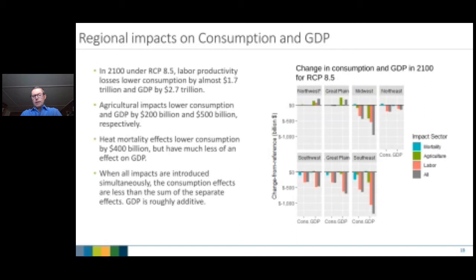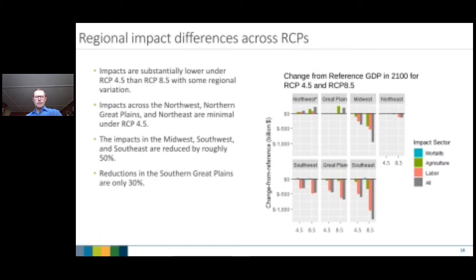A key takeaway is the importance of looking at regional variations. Another interesting finding is that many effects are roughly additive — combining agriculture plus labor impact gives approximately the same result as shocking the model with all impacts simultaneously. Under RCP 4.5, which is considered less extreme, damages are definitely reduced across the board for all regions and sectors, as expected.